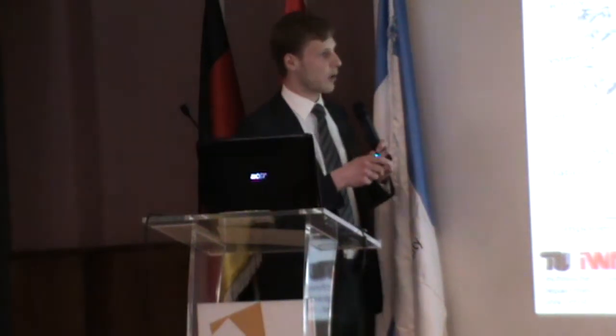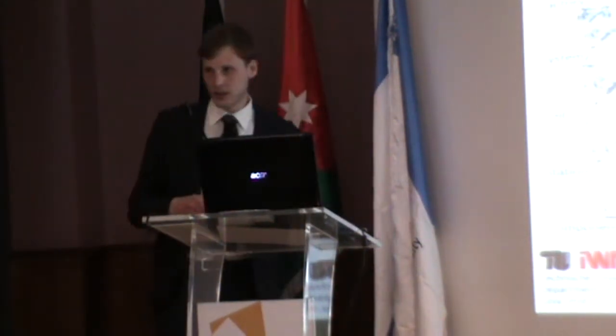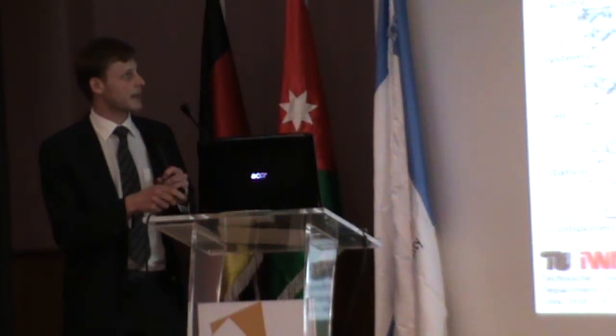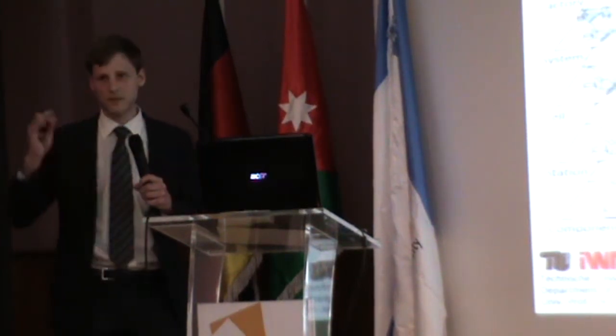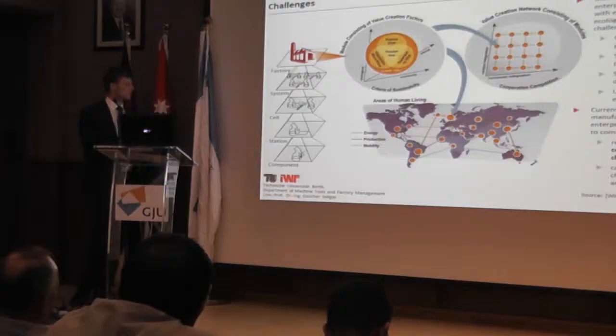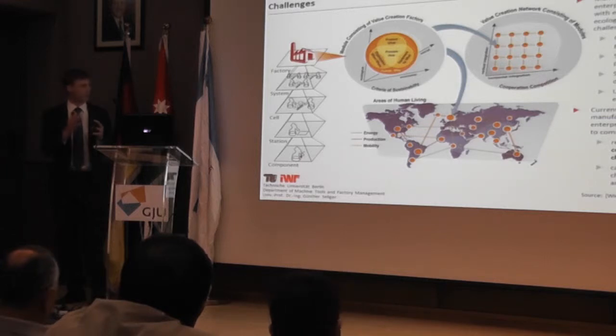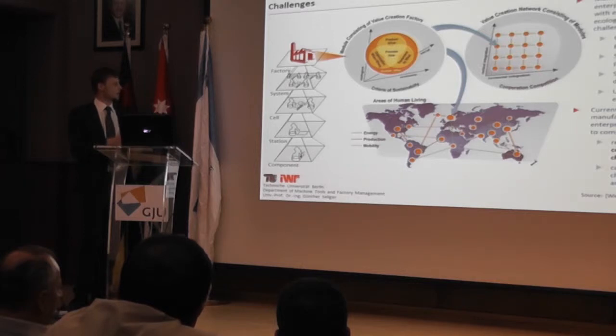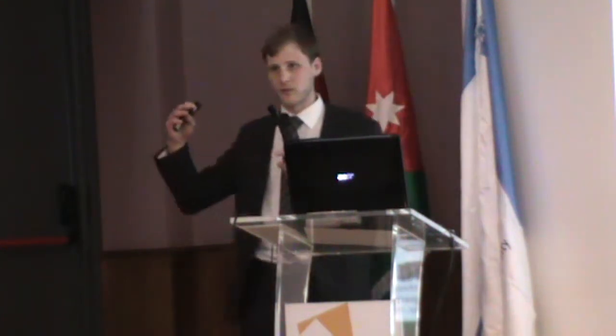Going deeper, according to Wiendahl's logic that was already introduced, we can divide the factory into different factory levels. For example, at the system level we consider the factory as a black box, with raw materials coming in and semi-finished or finished products out. Then we have a cell, station, and at the end a component level — for example, the movement of one robot in a specific situation.